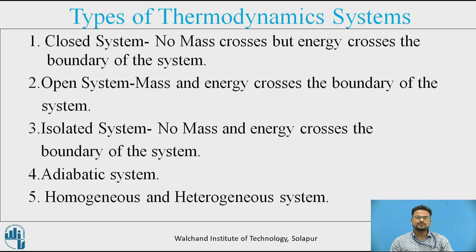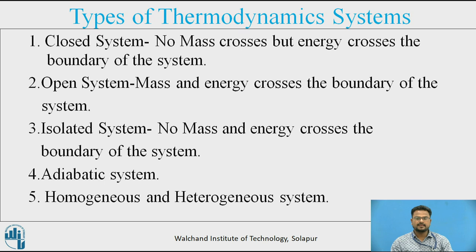In a closed system, if the boundary of the system is impervious to the flow of matter, it is called a closed system. The system consists of gas confined between a cylinder and a piston. Although heat and work may cross the boundary and the volume of the system may change owing to the motion of the piston, it is a closed system since no mass crosses the boundary. Examples: radiator of an automobile, refrigerant in a refrigerator, pressure cooker, and an IC engine during compression and expansion stroke.